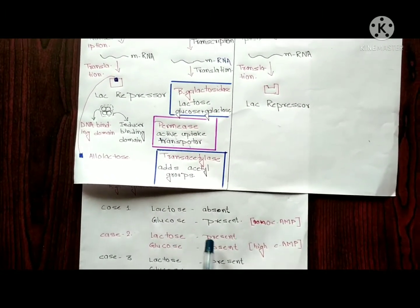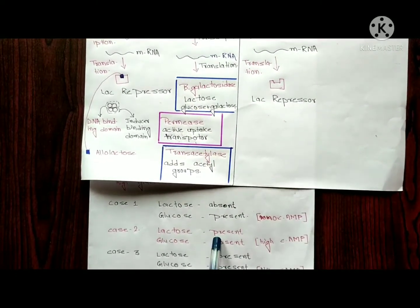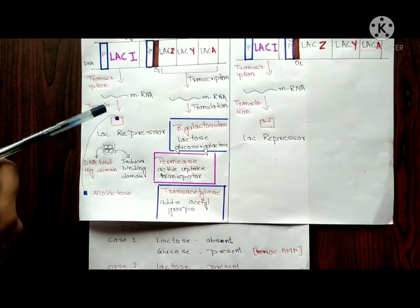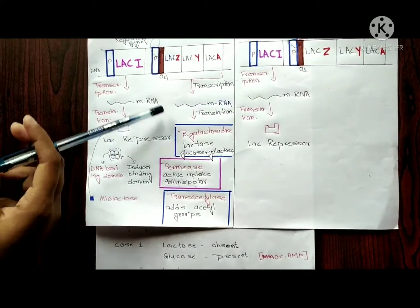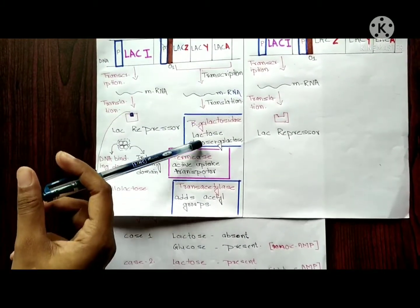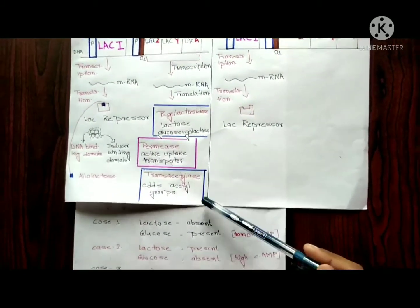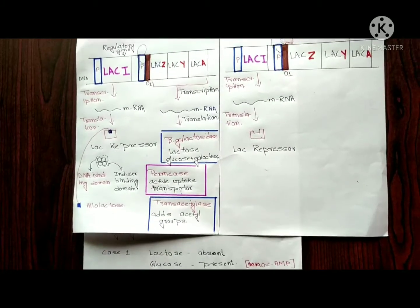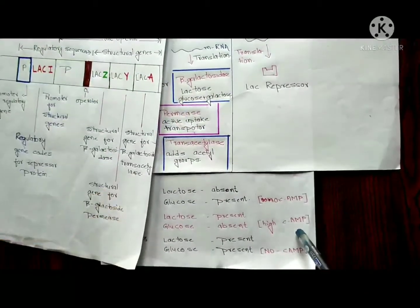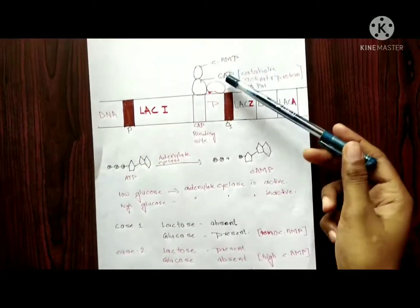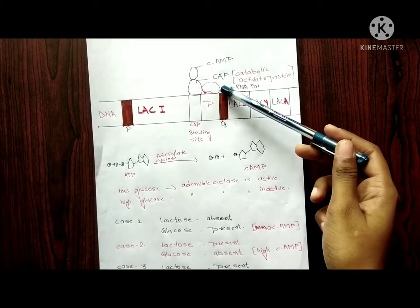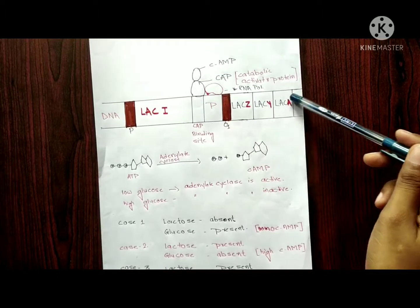Case 2: when lactose is present and glucose is absent. Lactose is present, so allolactose is also present. Allolactose binds the lac repressor so it cannot bind the operator, and RNA polymerase can bind freely. Also, glucose being absent means cyclic AMP levels are high, CAP is activated, and due to conformational changes in DNA, RNA polymerase binds tightly and the transcription rate increases.